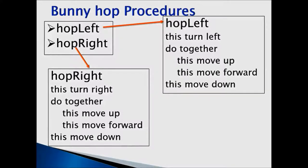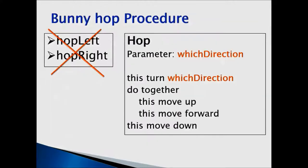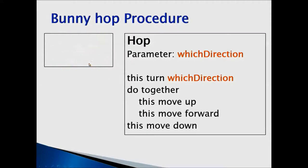So why repeat this code again and again for two different procedures? Instead of creating hop left and hop right, we are going to create just one procedure called hop, and in our instruction for turn left or right we are going to use a parameter. We are going to create a parameter and call it which direction.